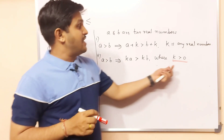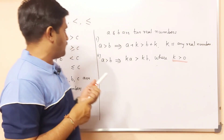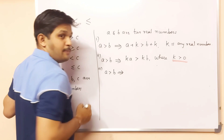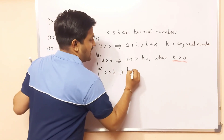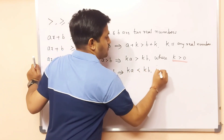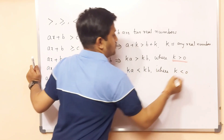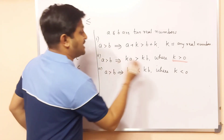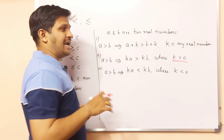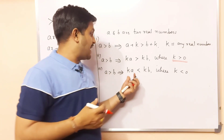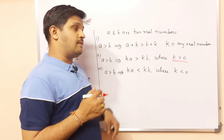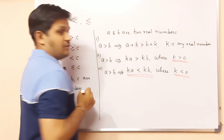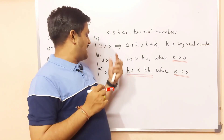When does the inequality reverse? When K is less than 0. If A > B, then K × A < K × B where K < 0. Whenever you multiply negative real numbers on both sides, the inequality will reverse. Similarly, if you divide by a negative number on both sides, the inequality will reverse. These are the standard rules to apply when solving linear inequalities.